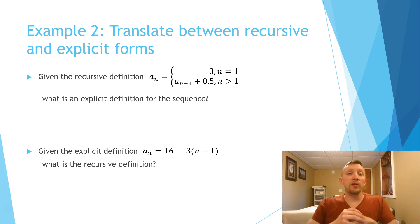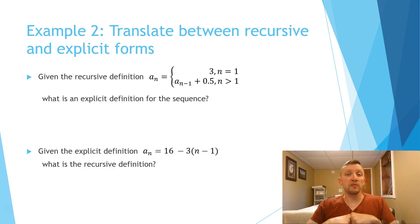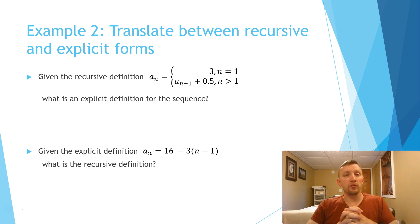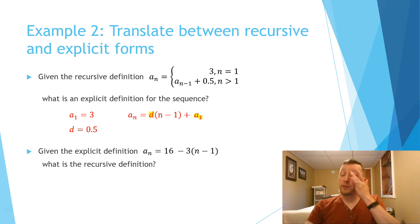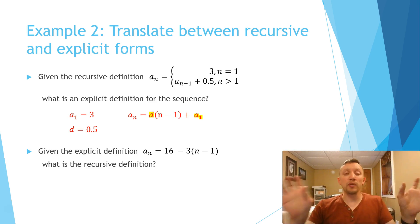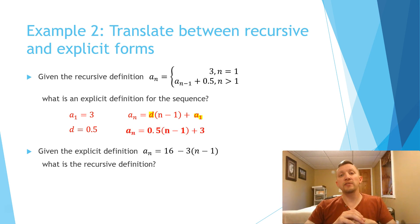Sometimes you'll need to translate between the two formulas. They might give you a recursive formula and ask for the explicit version, or vice versa. Here we have a recursive formula where the first term is 3 and each time we add one-half, so the constant difference is 0.5. To find the explicit formula, we identify those pieces: first term is 3, d is 0.5, and plug them in: 0.5 times (n minus 1) plus 3. You could simplify by distributing, but it's not necessary.